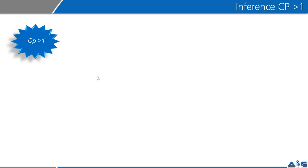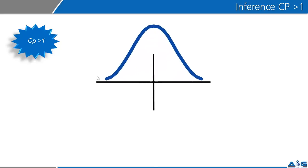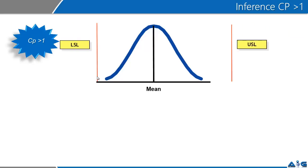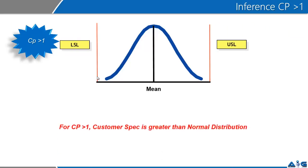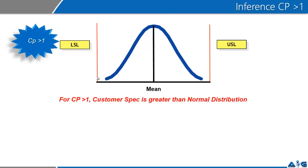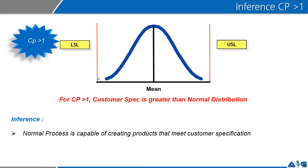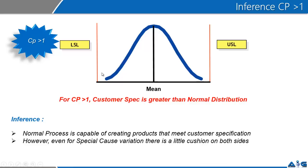The best condition is CP greater than one. If my CP were to be greater than one, my specification limits will be outside the normal distribution. For CP greater than one, the customer spec shall always be greater than the normal distribution curve. The inference is that the normal process is capable — it is well within the specification limit. Even for some special cause variation, there is a little cushion available on both sides. So CP greater than one is the best possible option for your service design.